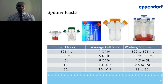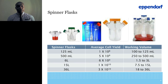Spinner flasks have a range from 125 mL up to 36 liters. They can accommodate anywhere from 1×10⁸ cells total all the way up to 3×10¹⁰ cells, with a working volume range from 100 mL to 36 liters. As you can see, there are some limiting factors — the maximum you can produce is 36 liters, which creates a bottleneck. We'll be exploring that further after our presentation.